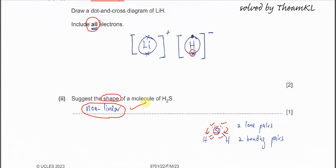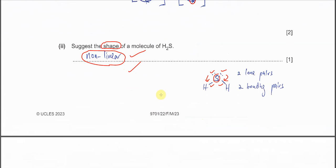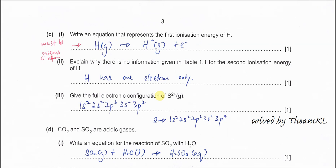Part C(i): Write an equation representing the first ionization energy of hydrogen. You must show the state symbols because whenever they ask for ionization energy equations, the state is very important. Gaseous atom forms gaseous ion: H(g) → H⁺(g) + e⁻.